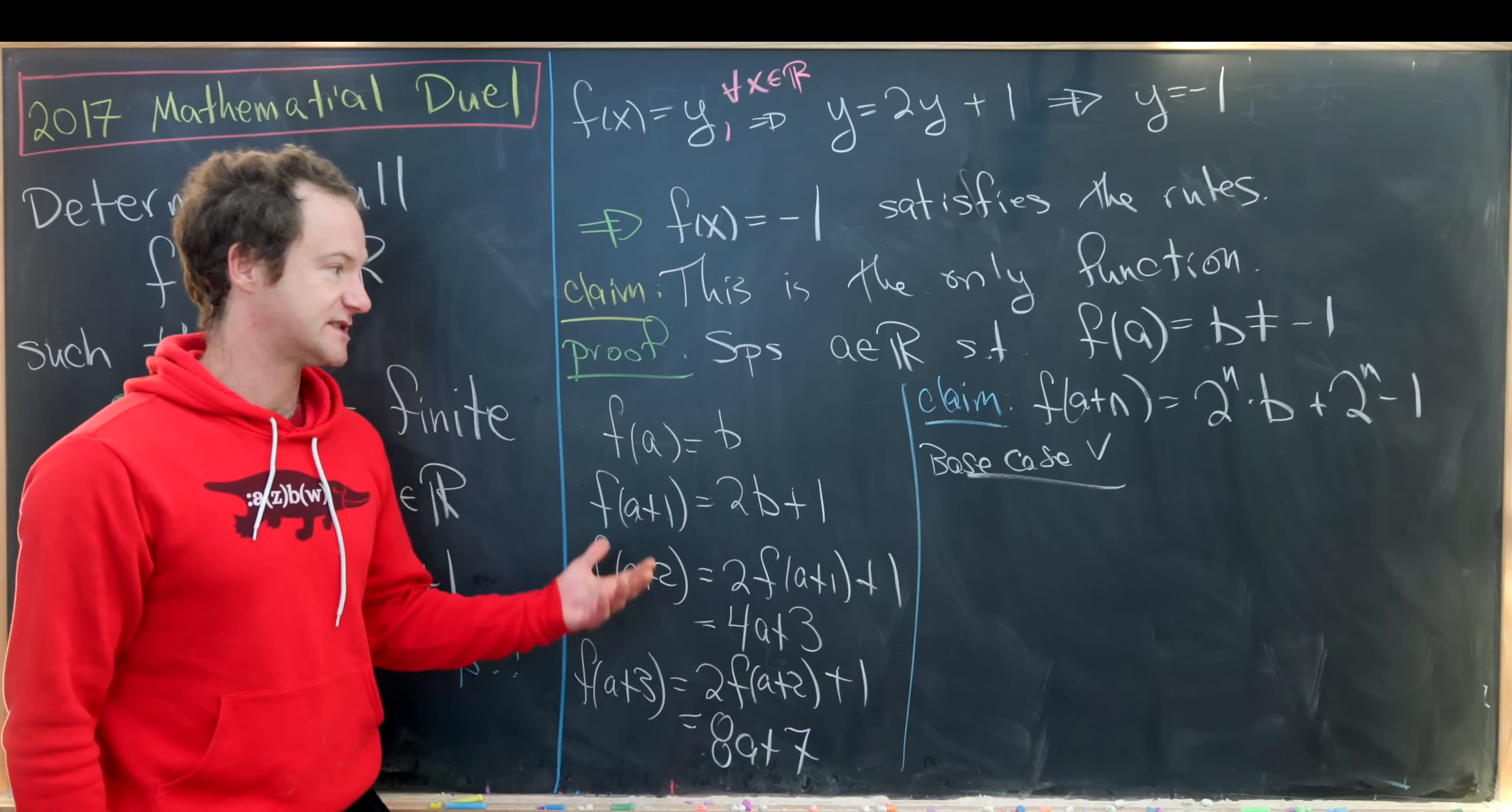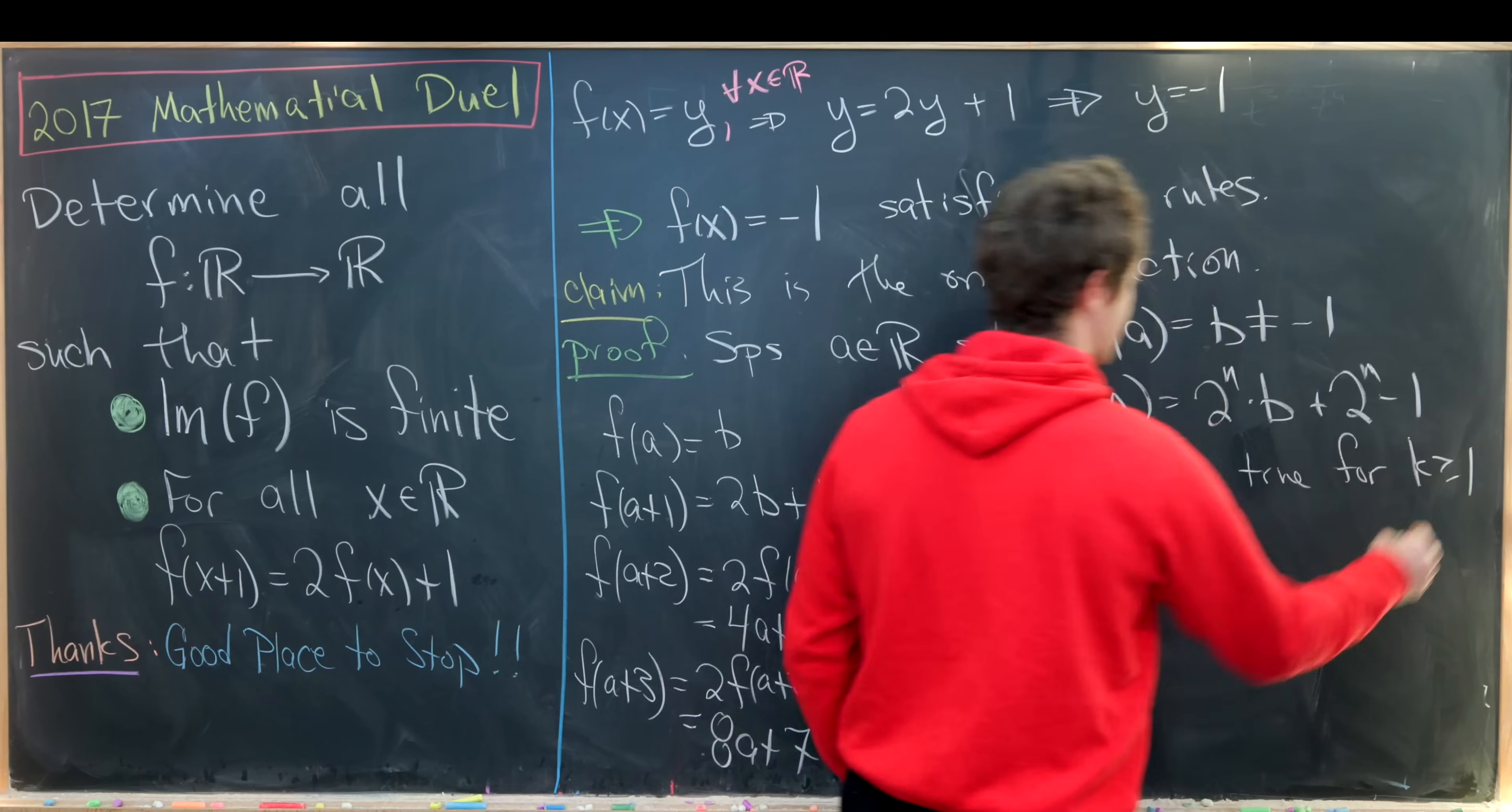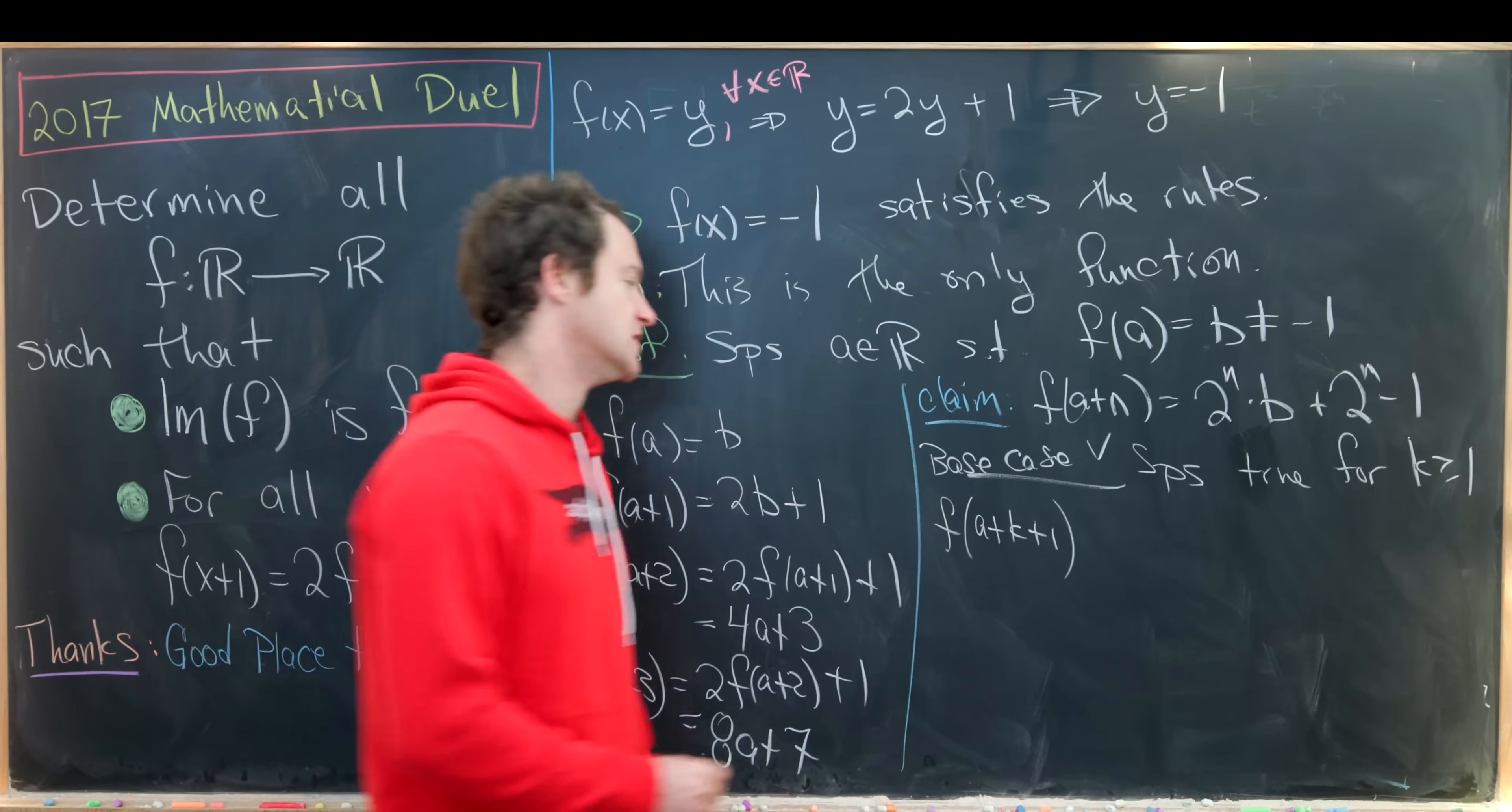So suppose this is true for some k bigger than or equal to 1, and then we'll look at f(a+k+1). So we know that that is equal to 2 times f(a+k) plus 1.